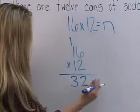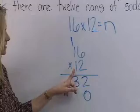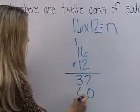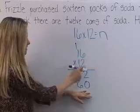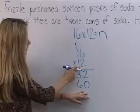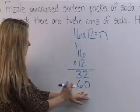Using 0 as a placeholder, moving to the tens place, 1 times 6 equals 6 for 60, because this is 1 group of 10 times 6, then 1 times 1 equals 1.